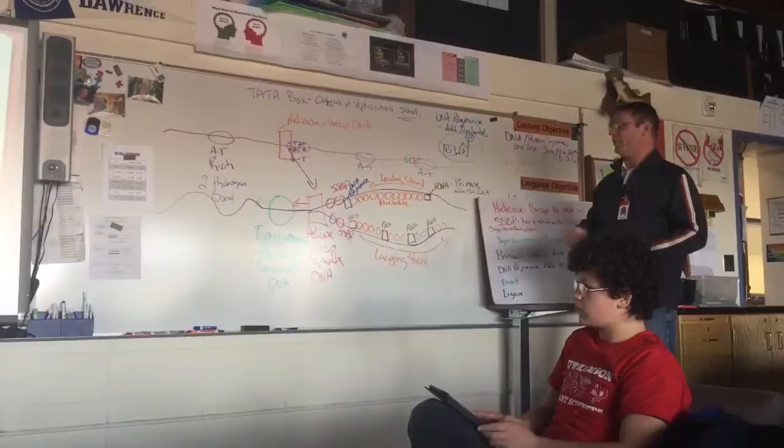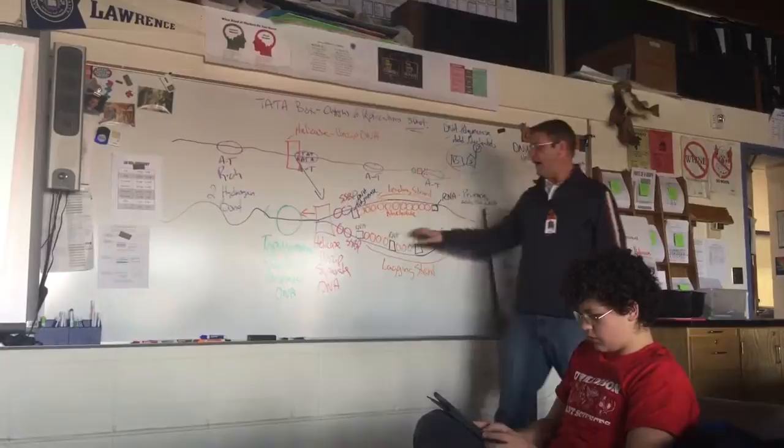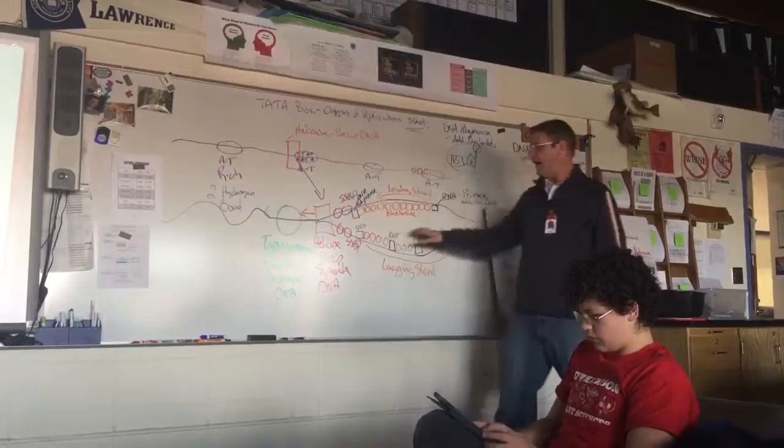The RNA primer, or primase, comes in and adds RNA bases. On one strand it adds just one RNA primer and continuously keeps making nucleotides — which is where we get continuous replication on one strand. On the other strand we get multiple RNA primers added in, and we'll talk about why in a moment.